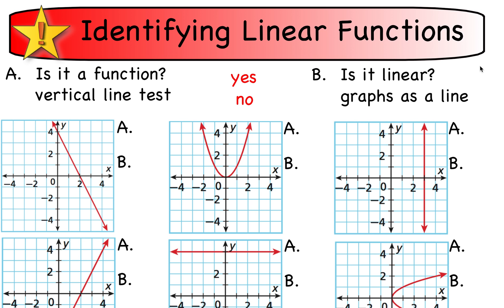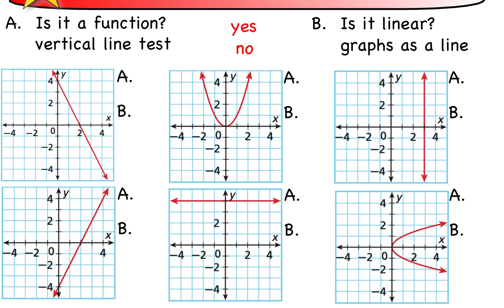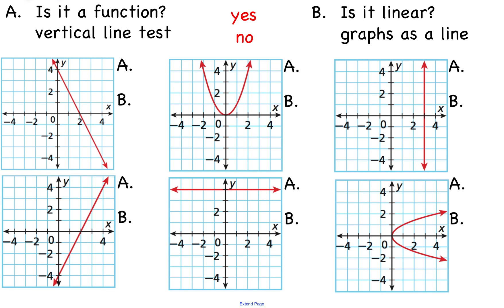To identify linear functions from graphs, we first use the vertical line test to determine whether it's a function — if a vertical line passes through the graph more than once, it can't be a function. Then we check whether it's linear, meaning it graphs as a line. Looking at the first example in the top left: it passes the vertical line test, so it is a function, and it graphs as a line, so it is linear.